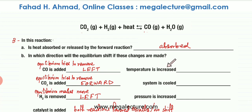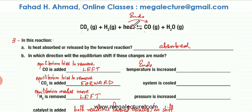The next part is that temperature is being increased. Le Chatelier's principle states that the endothermic reaction is going to be favored when temperature increases. In this case, we already know the forward reaction is endothermic — it absorbs heat energy. So when temperature increases, the endothermic forward reaction is favored and the equilibrium shifts to the right.